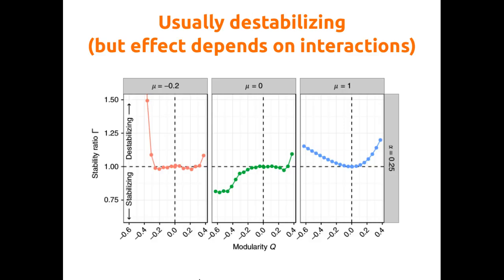The important point is that you can compare the effect — you can try to measure the effect of having a modular or anti-modular structure. By modular structure I mean groups that interact strongly within, and by anti-modular, groups that interact strongly between. This is compared against a random network.